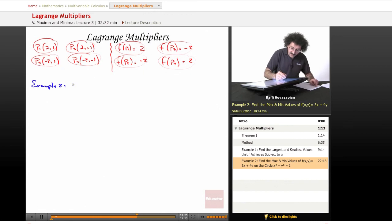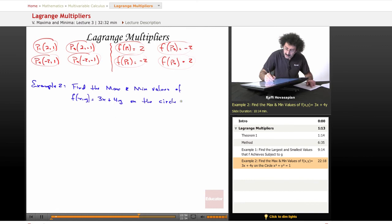Example two, find the max and min values of f of xy equals 3x plus 4y on the circle x squared plus y squared equals 1.